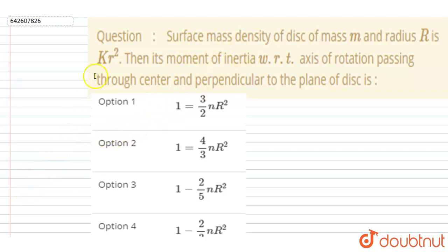And its moment of inertia with respect to axis of rotation passing through center and perpendicular to the plane of the disk is what? So first of all, here the mass per unit area, that is surface mass density, is varying with the distance.